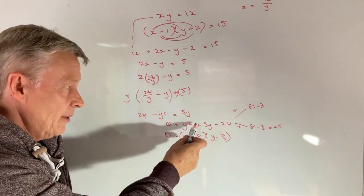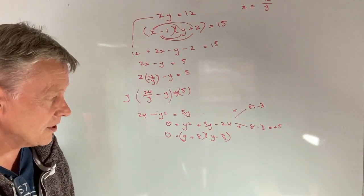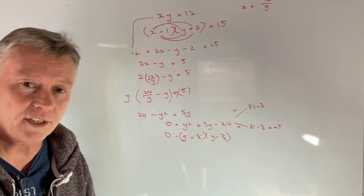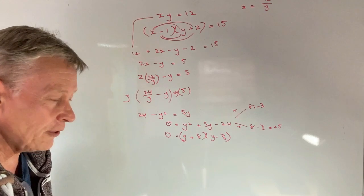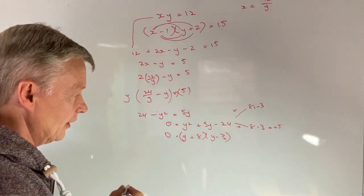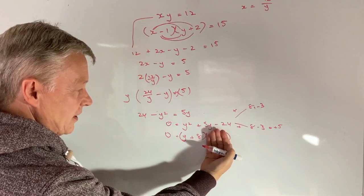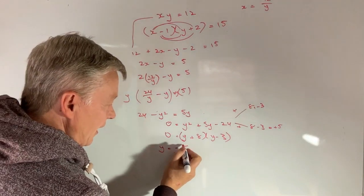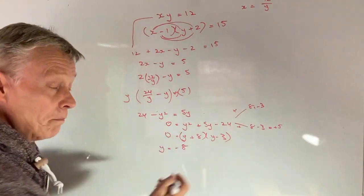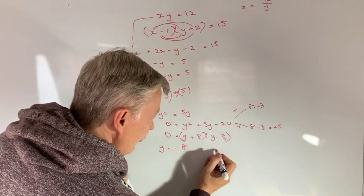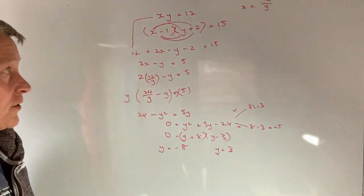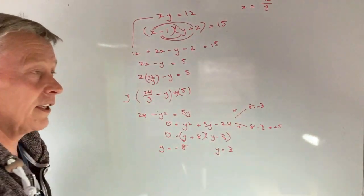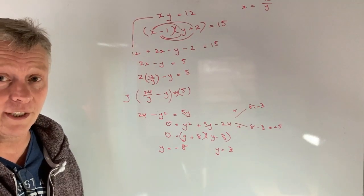If you're not sure about that, you're not sure about the steps I've taken there, please do have a look at some of the other questions and some of the other playlists on factorizing. So I've now got, at long last, my two values of y. My first value of y is where I say y plus 8 equals 0. So therefore, y equals minus 8. And my second value of y is where y minus 3 equals 0. So therefore, y equals 3. And then it's really a case of just taking these two numbers and plugging them straight into the equation to be able to get my value of x.